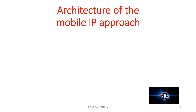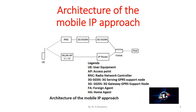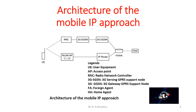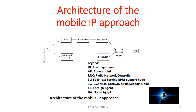Here is the architecture of the mobile IP approach. UE represents user equipment. AP represents access point. RNC represents radio network controller. 3G SGSN represents 3G serving GPRS support node, and 3G GGSN represents 3G gateway GPRS support node. FA represents a foreign agent. HA represents home agent.